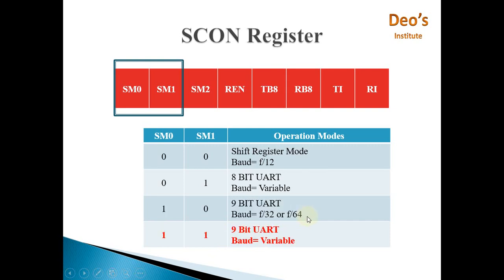Mode 3 is also 9-bit UART, same as Mode 2, except the baud rate is variable. Again, 9-bit data with 1 start bit and 1 stop bit, and TB8 and RB8 are used for storing the 9th bit.